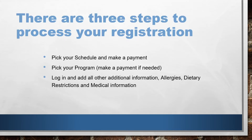There are three steps to process your online registration. First, pick your schedule and make a payment. Second, pick your program. Third, log in and add all other additional information — allergies, dietary restrictions, and medical information to your profile.